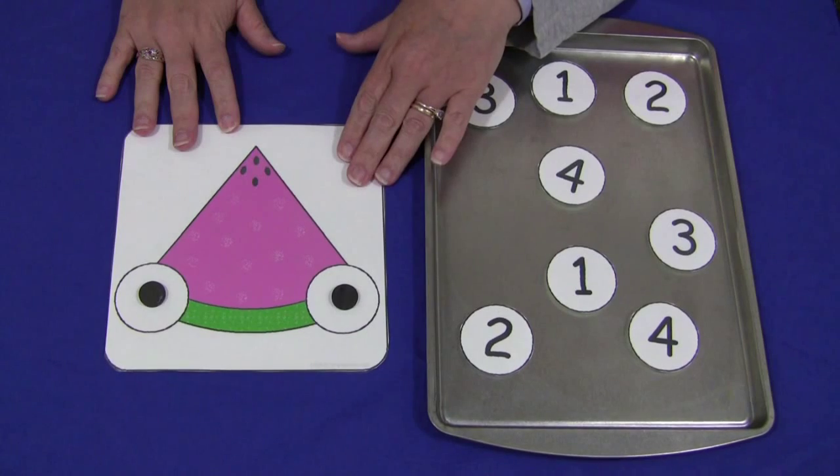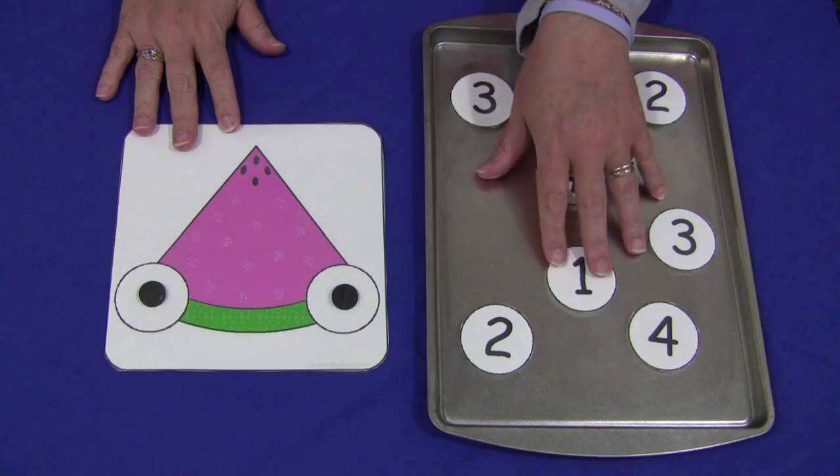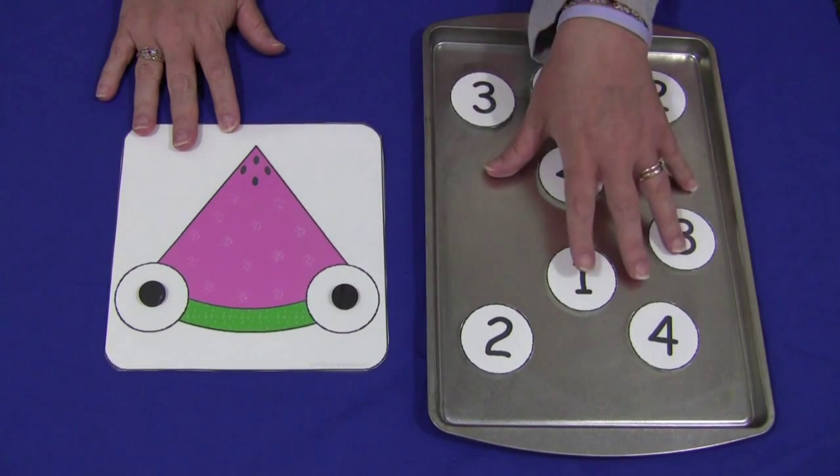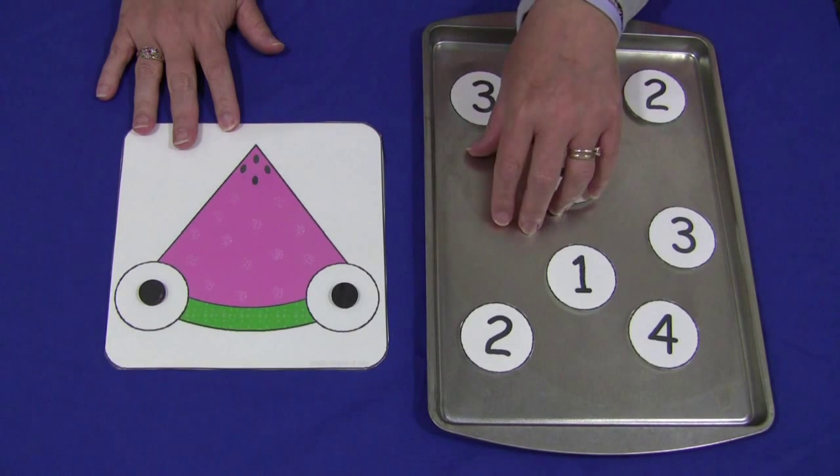Again, you just print this out, attach some magnets and then I have numbers sitting out. I would have more than this sitting out but this is just for the video example purposes.